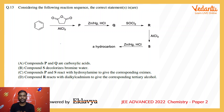This is a very standard question. In the first step, this is basically a Friedel-Crafts acylation, so P would simply be the acylated benzene product.